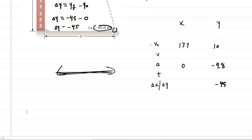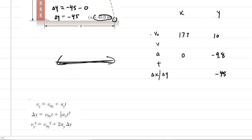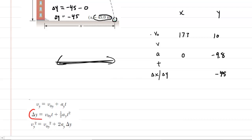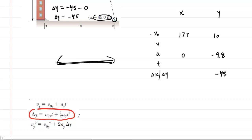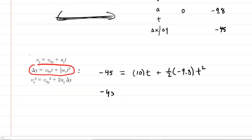Next, we turn to the equations of kinematics. Using the information in the y direction, we can solve for the time of flight. The middle kinematic equation gives us enough information. Filling in known values: delta y is negative 45, equal to the initial velocity in the y direction (10) times t, plus one-half times the acceleration (negative 9.8) times t squared. Simplifying: negative 45 equals 10t plus negative 4.9t squared.